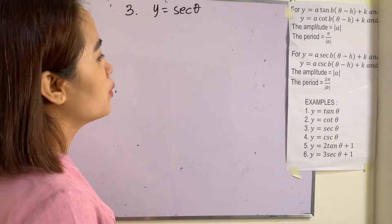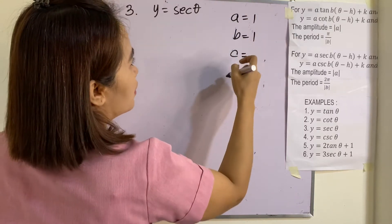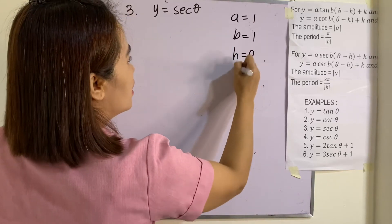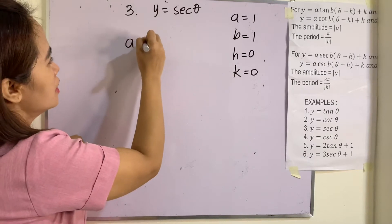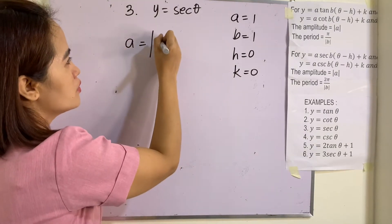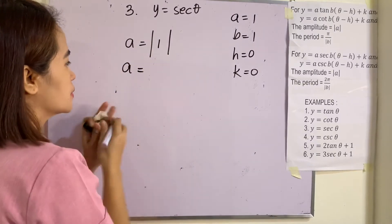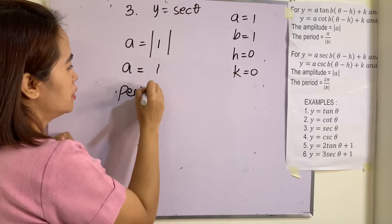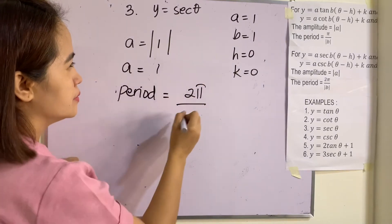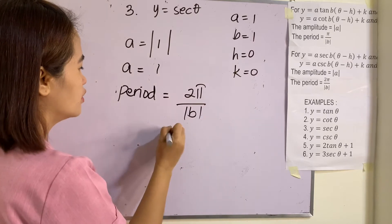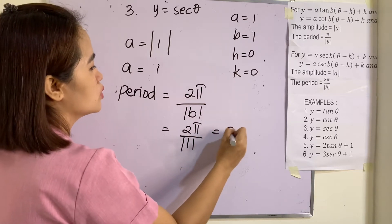Example 3: y = sec(θ). Written in standard form, a = 1, b = 1, h = 0, k = 0. The amplitude is |a| = |1| = 1. Since this is a secant function, the period is 2π/|b| = 2π/|1| = 2π.